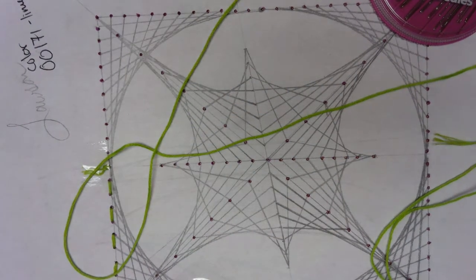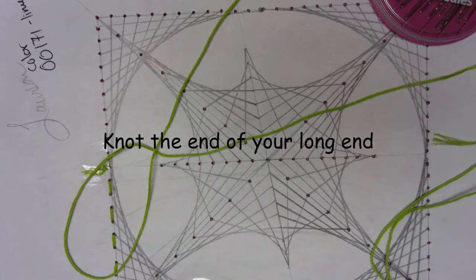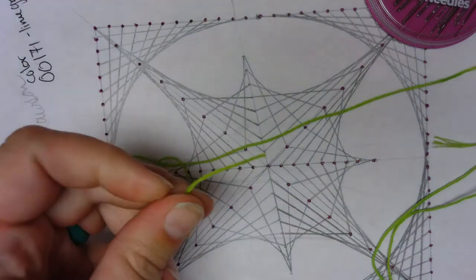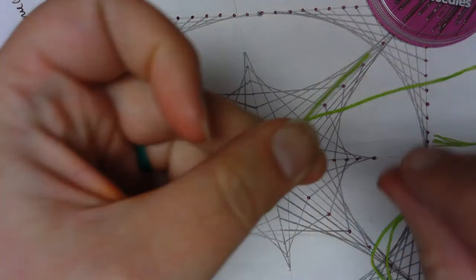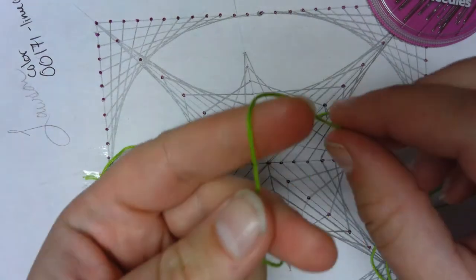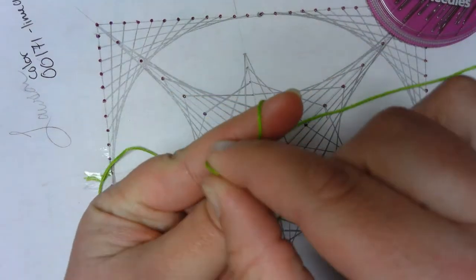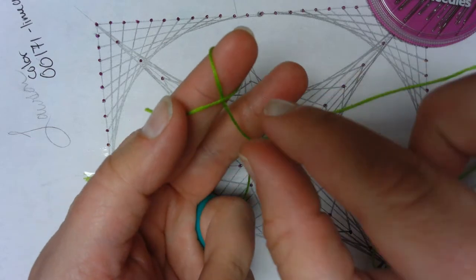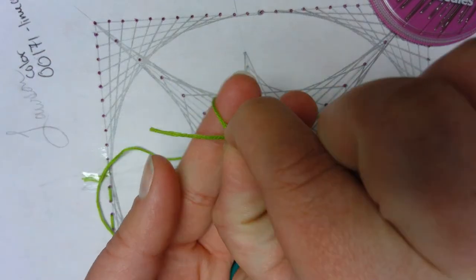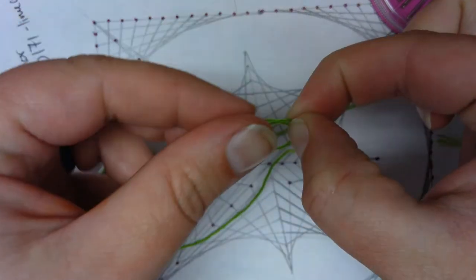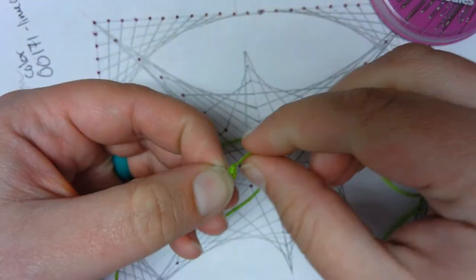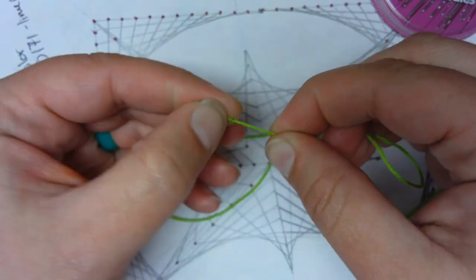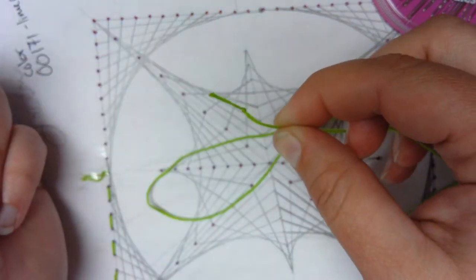In case you've never sewn before, it's very good to knot the end of your thread on your long end. There's two different ways to do this. The way that I used to do it when I was a kid, I would take my thread, wrap it around my finger, grab hold of the loop, push the tail through the loop, and pull. That'll create just a nice little single knot right there at the end.